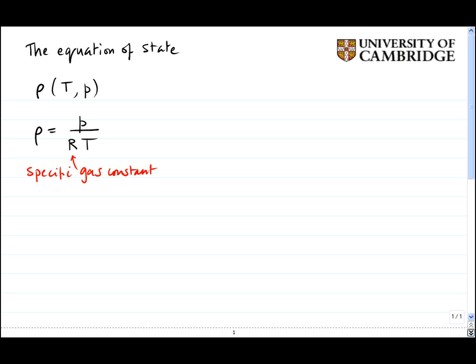This is equivalent to the equation of state that you often see at school, which is that PV is equal to nRT, where this r now is the universal gas constant, 8.314 joules per mole per Kelvin.